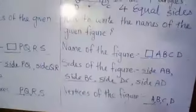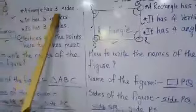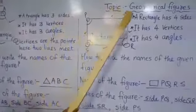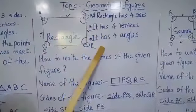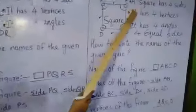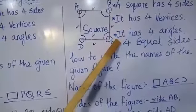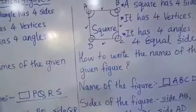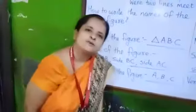Remember all the things we learned today: a triangle has three sides, three vertices, and three angles. A rectangle has four sides, four vertices, and four angles. A square has four sides, four vertices, four angles, and four equal sides. In the next class we will learn about the circle. Thank you so much, children.